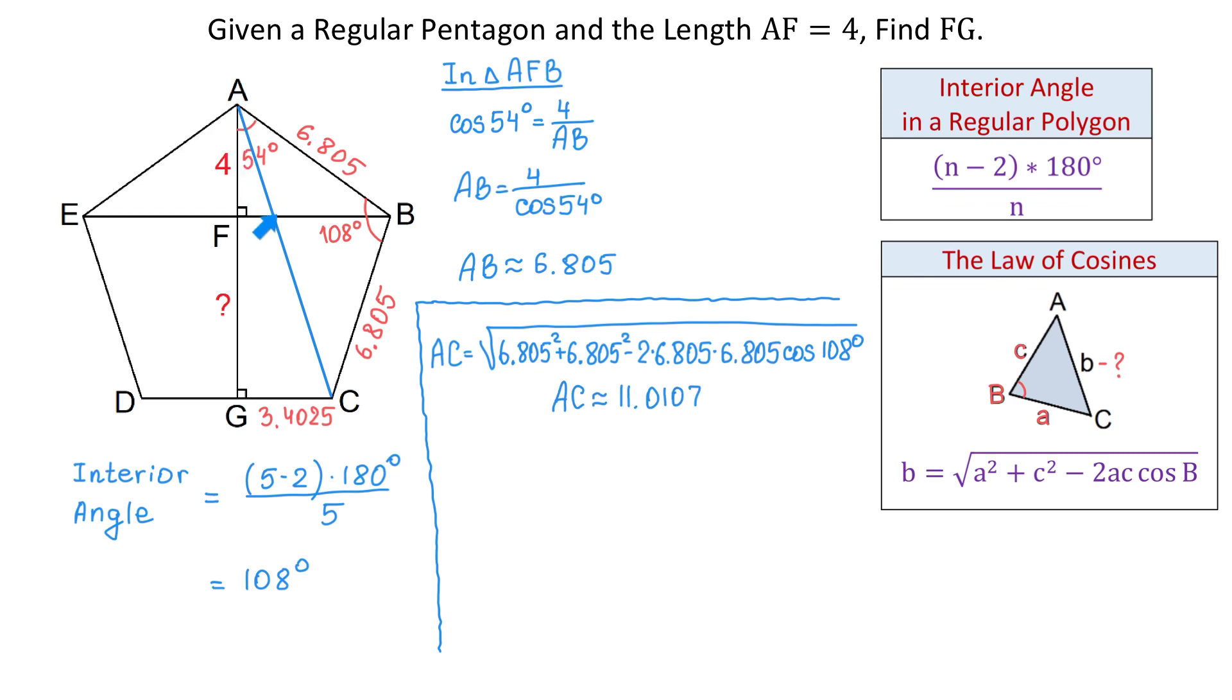So now we have AC and AC is also the hypotenuse of the right triangle AGC. Now, in this triangle, we can use the Pythagorean Theorem to find the side AG. So AG equals square root of the hypotenuse 11.0107 squared minus the side 3.4025 squared. Then, AG is approximately 10.47.